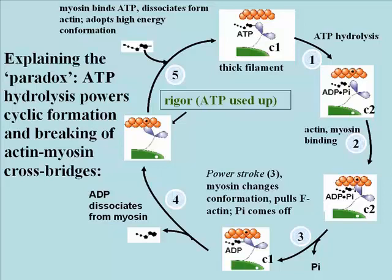So this is the cycle of making and breaking myosin cross bridges, and it explains the role of ATP in both contraction and relaxation. So the paradox is resolved.